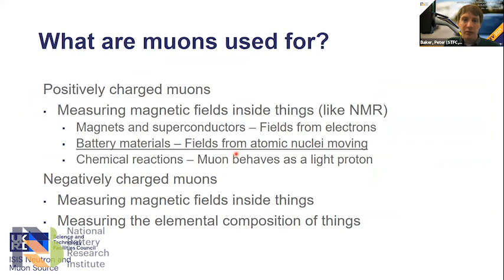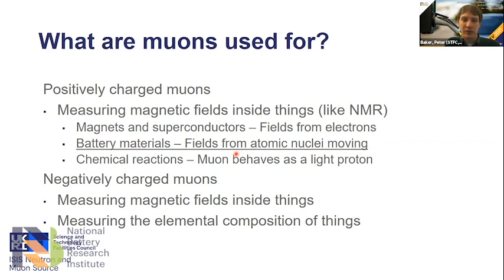We use positively charged muons — the anti-matter particle — which can be made fully spin polarized, allowing us to measure magnetic fields inside things a little like NMR. In battery materials, it's the fields from the atomic nuclei around where the muon stops and how they change as ions move. We can also use negatively charged muons to understand elemental composition, since they are captured by elements and emit x-rays, similar to x-ray fluorescence experiments.